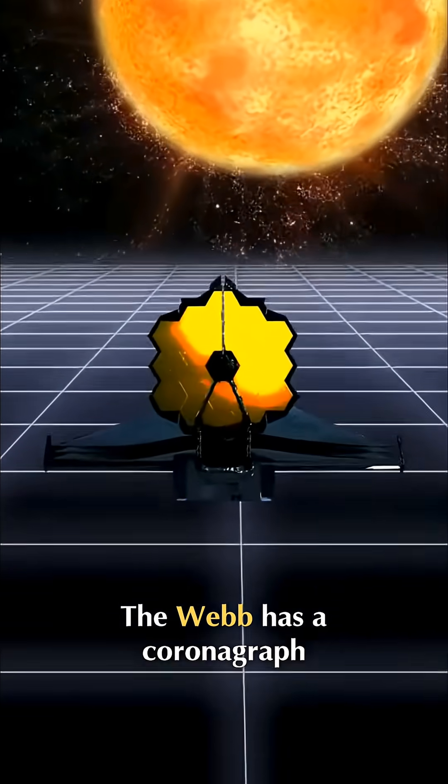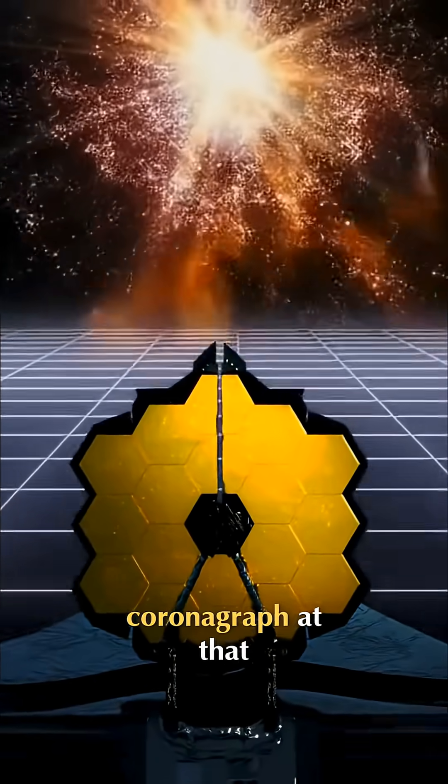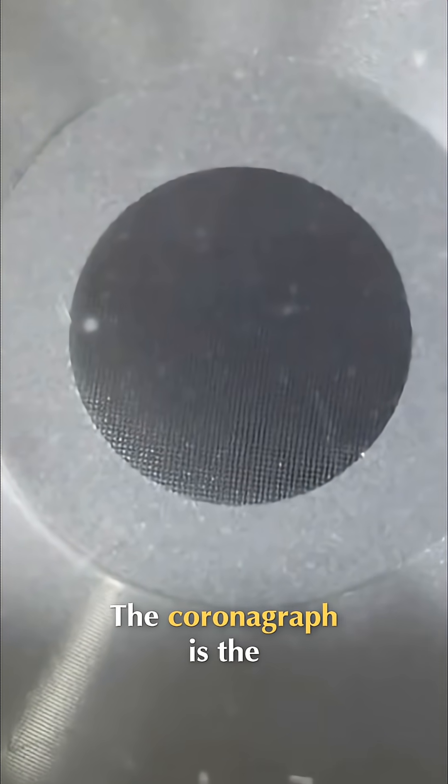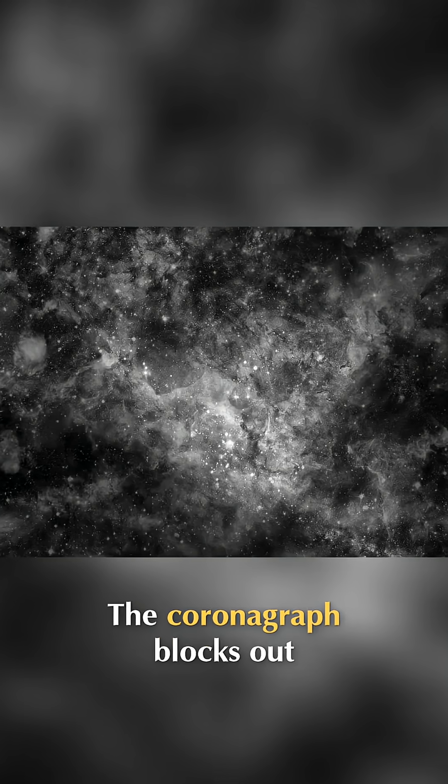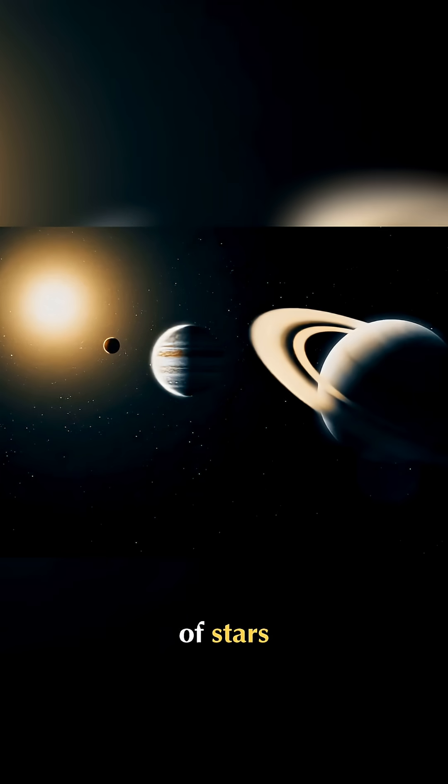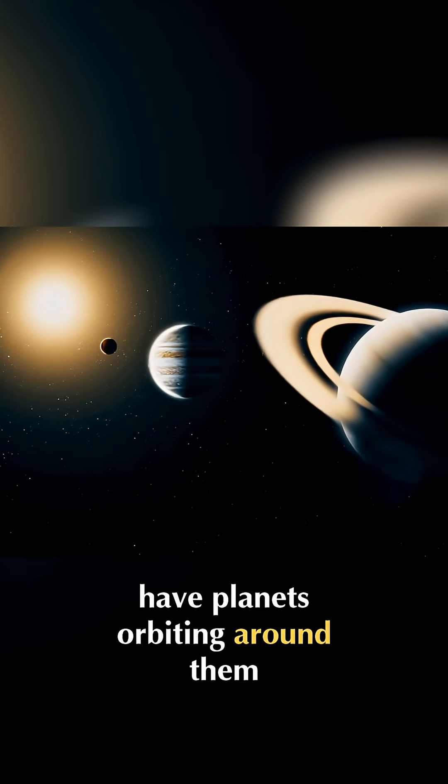The Webb has a coronagraph, and a very special coronagraph at that. The coronagraph is the tool that will allow the first real pictures of exoplanets. It blocks out the bright pinpoint light of stars which we already know have planets orbiting around them.